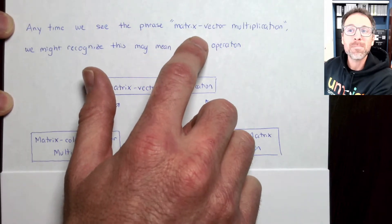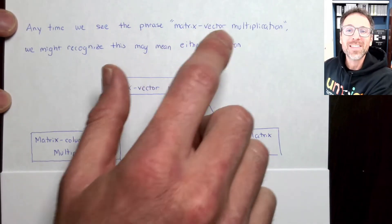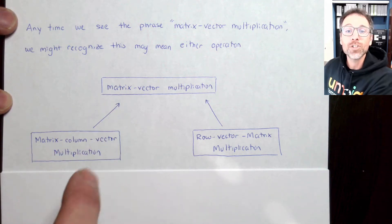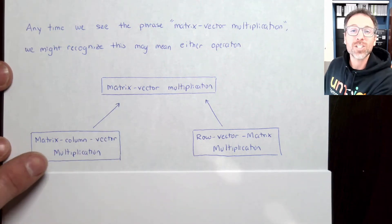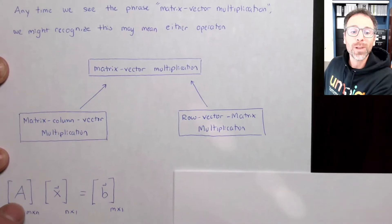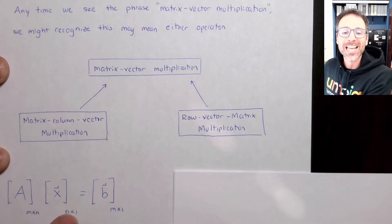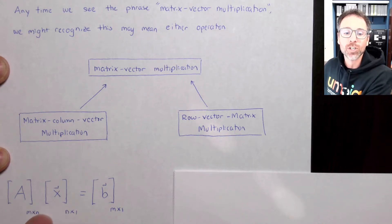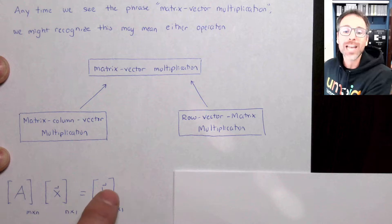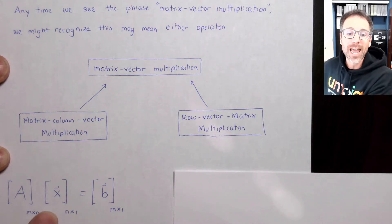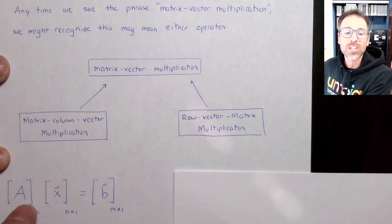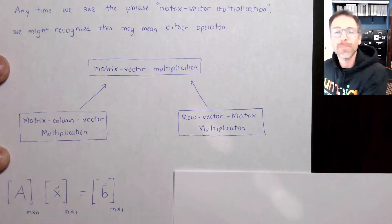When we hear the phrase matrix vector multiplication, that actually may refer to one of two different operations. One of those is called matrix column vector multiplication, where we multiply an m by n matrix on the right hand side by an n by one column vector, where the inner dimensions must agree and cancel out, producing an output vector with outer dimensions m by one.